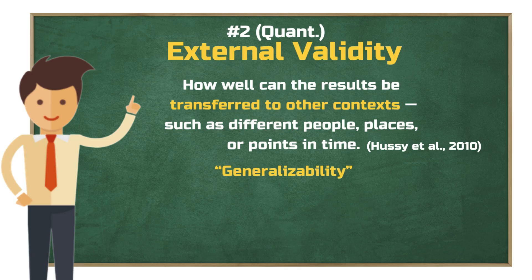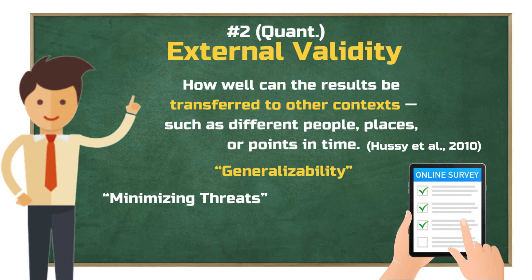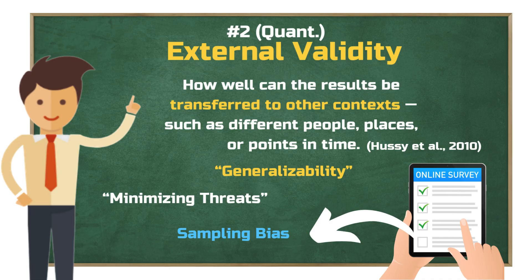And it's not just important in experiments — survey research also relies on external validity, because generalizing the results is often the whole point. So how do we make sure our results are generalizable? Again, it's about minimizing threats. And in this case, one of the big ones is sampling bias. If the sample is skewed in some way — for example, if people were pressured to participate, or if the group doesn't represent the broader population — that's a threat to external validity.